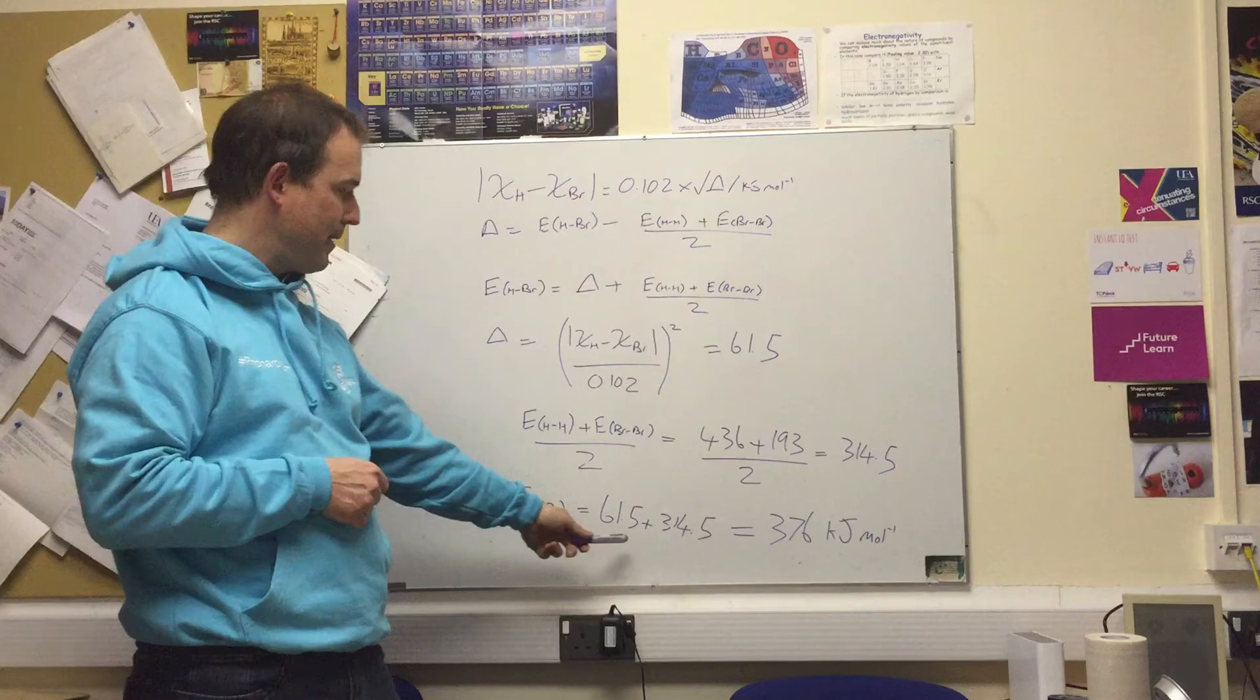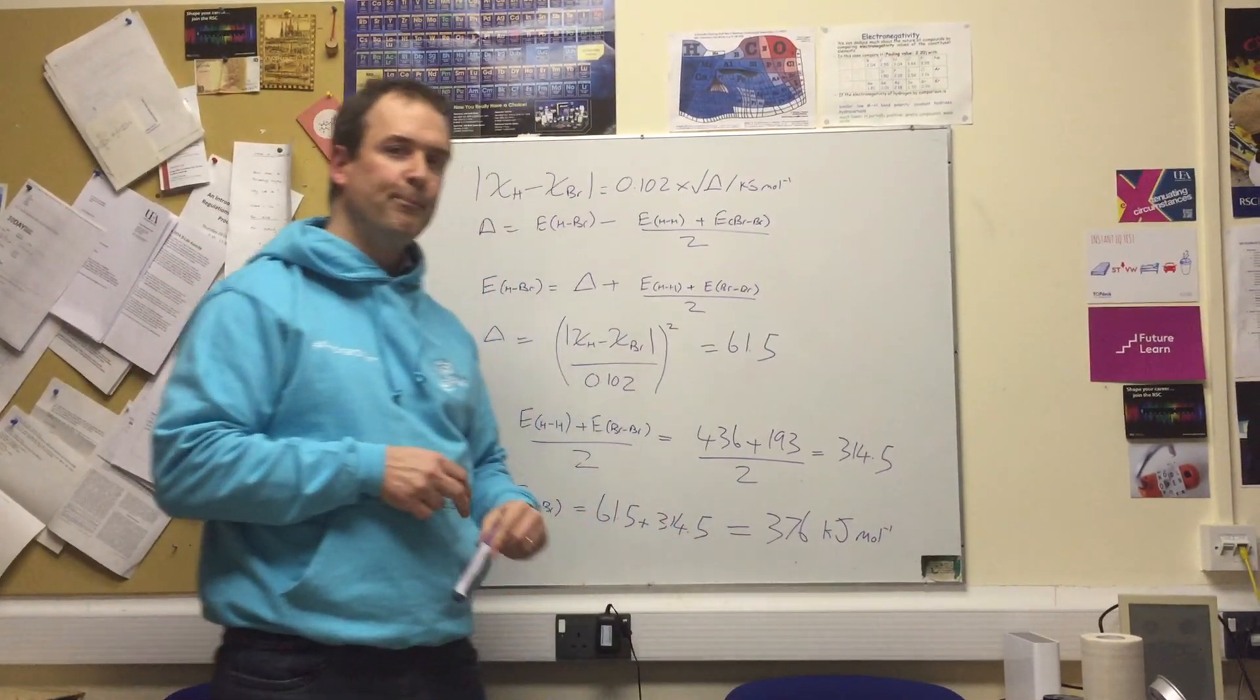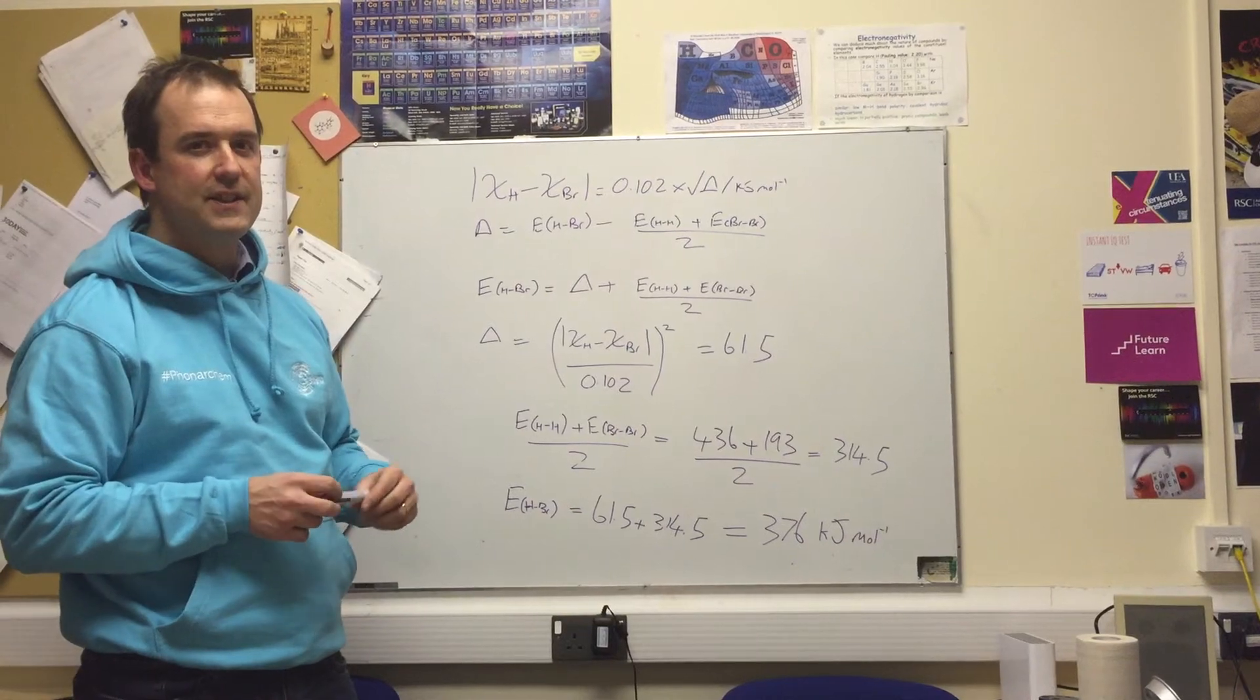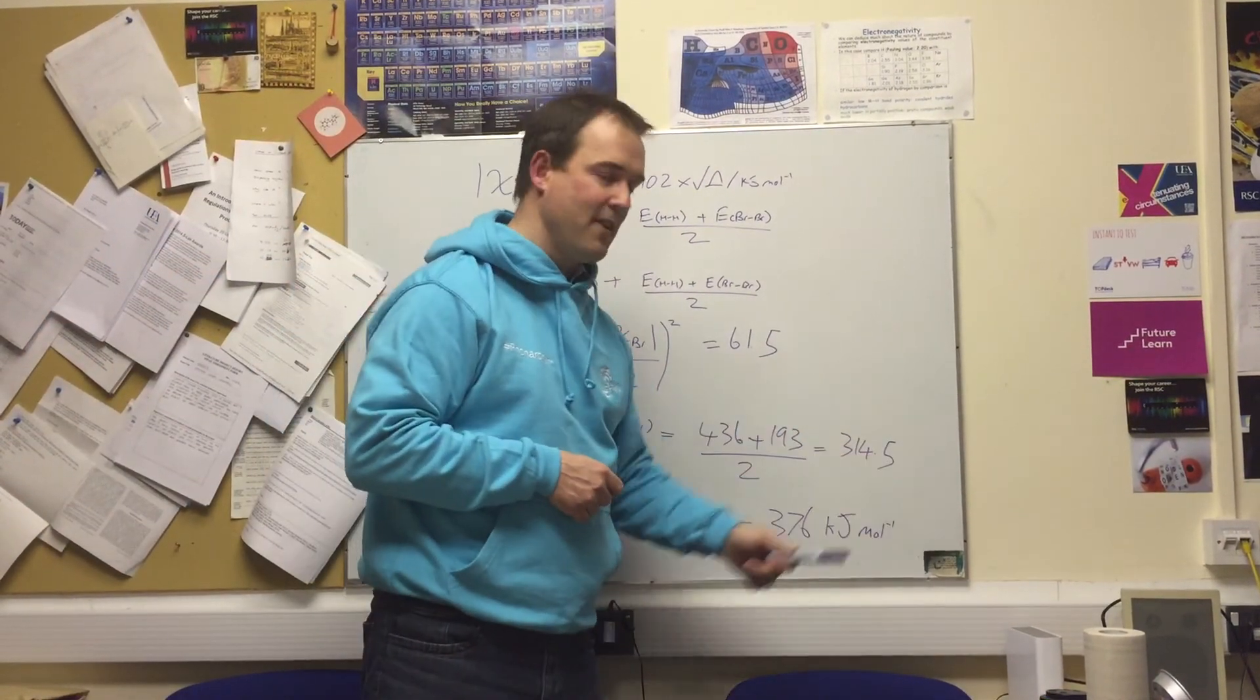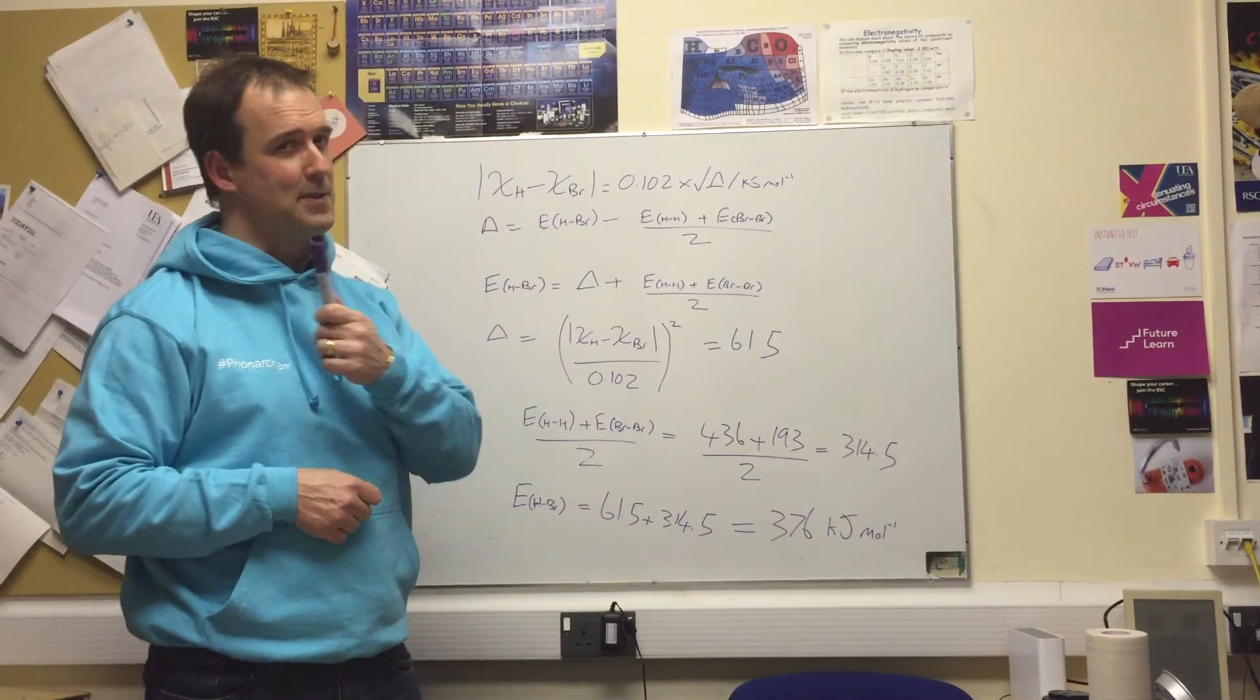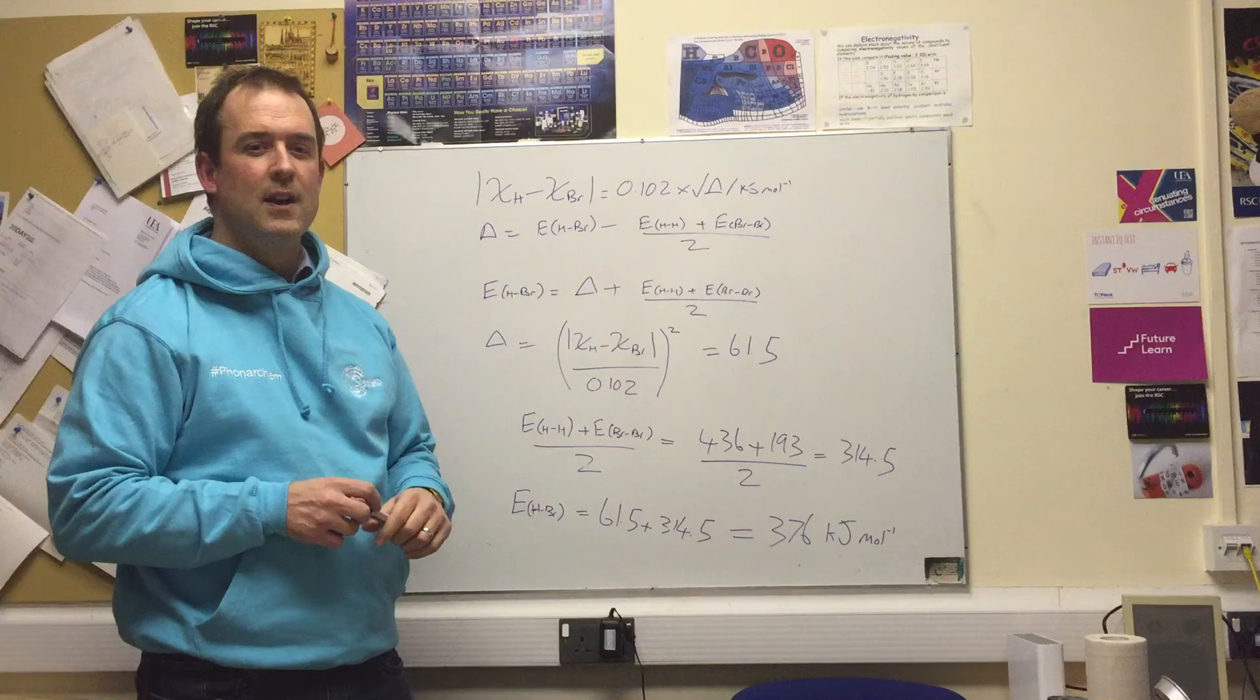We need to add that ionic component to the covalent component and we get the grand total of 376 kilojoules per mole. I could have put kilojoules per mole here and here and I've been a bit lazy. We mustn't forget, we must never forget the units, so it's in kilojoules per mole. Great!